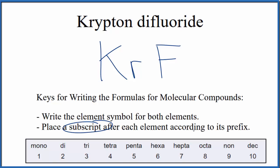Next, we'll place a subscript after each element according to its prefix. So for krypton, there's nothing written. We don't write mono on the first element. So we don't need to do anything for krypton. There's only one krypton. It's not written, but we assume it to be one.